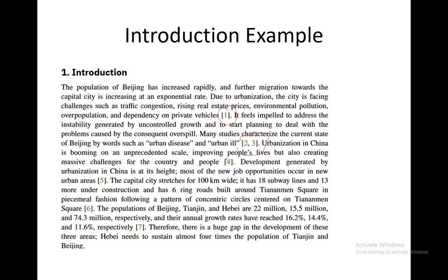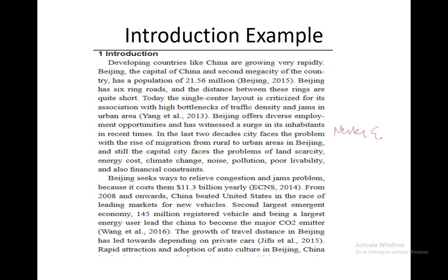As you can see here, the numbers one, two, three, and four are basically references — each and every piece of information should be properly cited. In another example, the very first sentence mentions information about 21.5 to 6 million people, so you need cited evidence. Similarly, 11.3 billion yearly cost requires a reference. Keep in mind: the more short and concise your article is, the more attractive it will be.